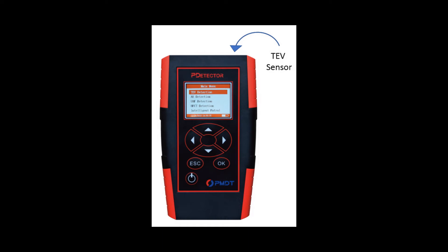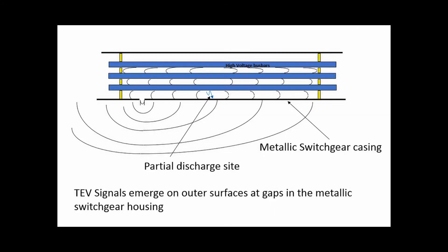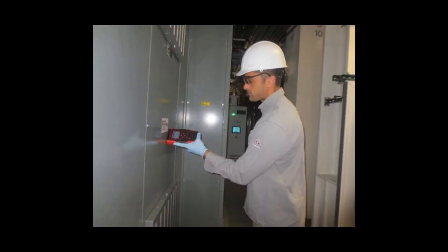TEV, or transient earth voltage, are induced voltage spikes on the surface of the surrounding metalwork. This occurs because the partial discharge creates current spikes in the conductor and hence also in the earth metal surrounding the conductor. TEVs are a very convenient phenomenon for measuring and detecting partial discharges, as they can be detected without making an electrical connection or removing any panels. While this method may be useful to detect some issues in switchgear and surface tracking on internal components, the sensitivity is not likely to be sufficient to detect issues within solid dielectric cable systems.